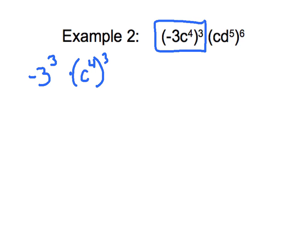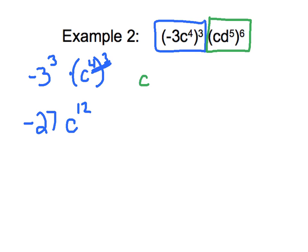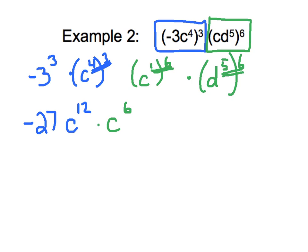Negative 3 to the 3rd power means negative 3 times negative 3 times negative 3, which gives us negative 27. And when I apply the power to a power rule, I multiply those exponents, giving me c to the 12th power. Now for the other part of the problem — we also have to apply power to a power first. We take the c term, which is really c to the 1st, and apply that 6th power from the outside of the parenthesis. We're also going to have d to the 5th to the 6th power. Power to a power means we multiply our exponents, so we get c to the 6th power times d to the 30th power.